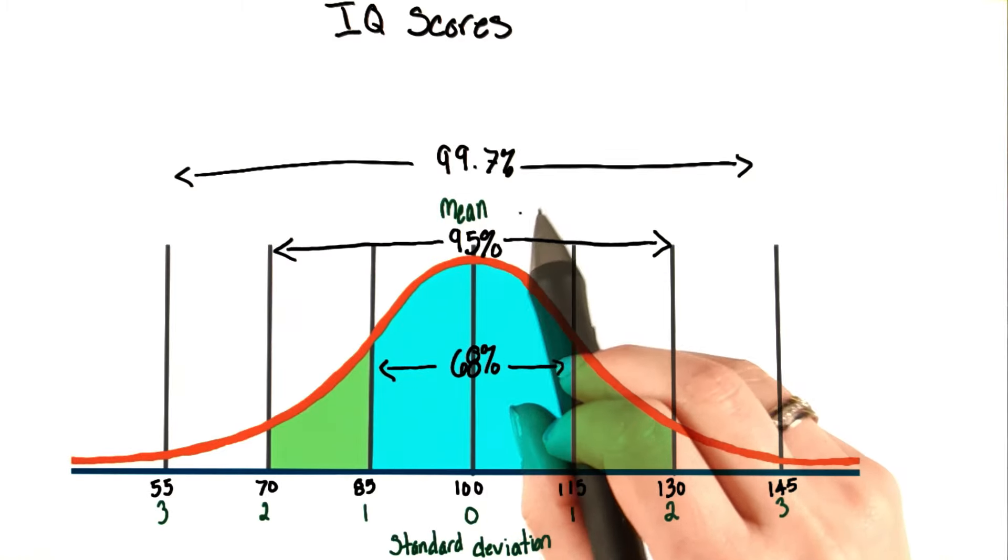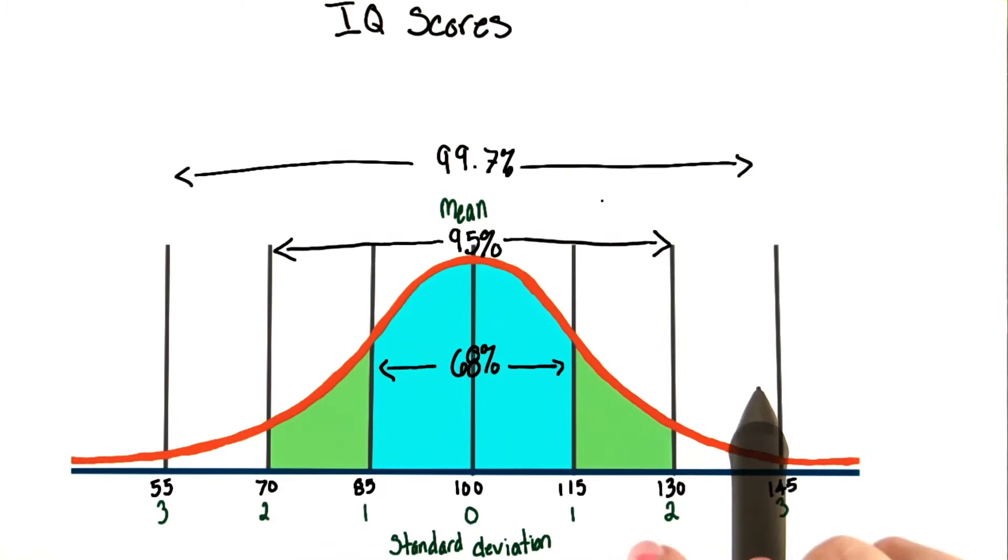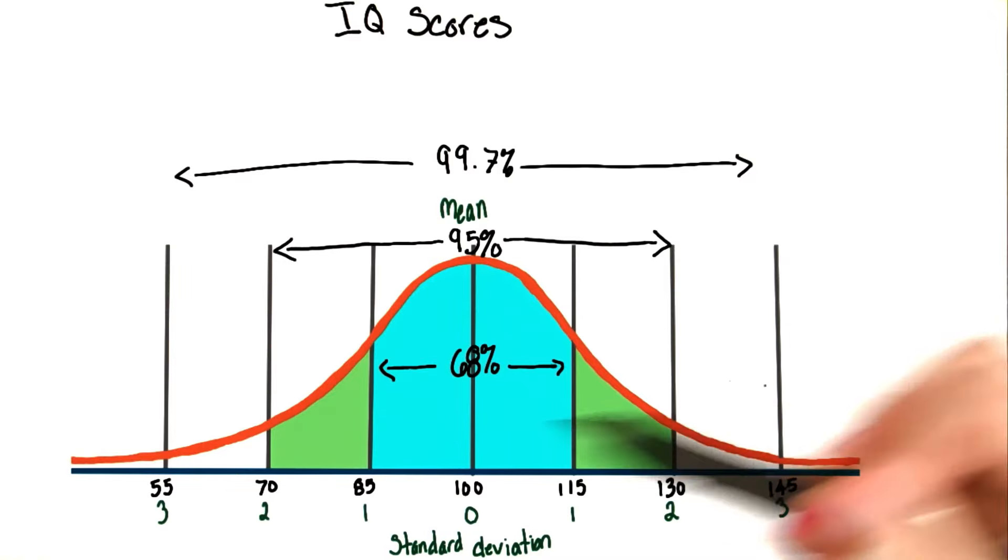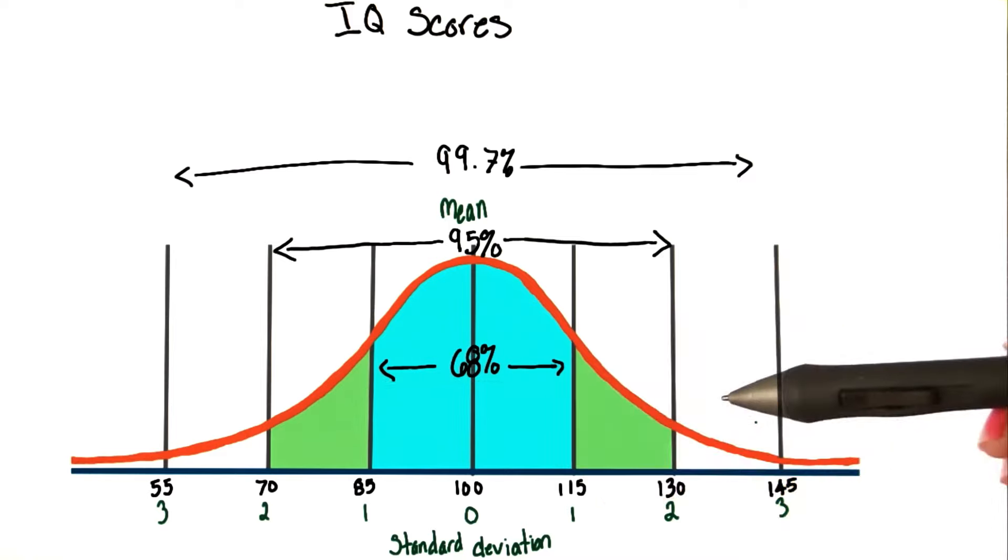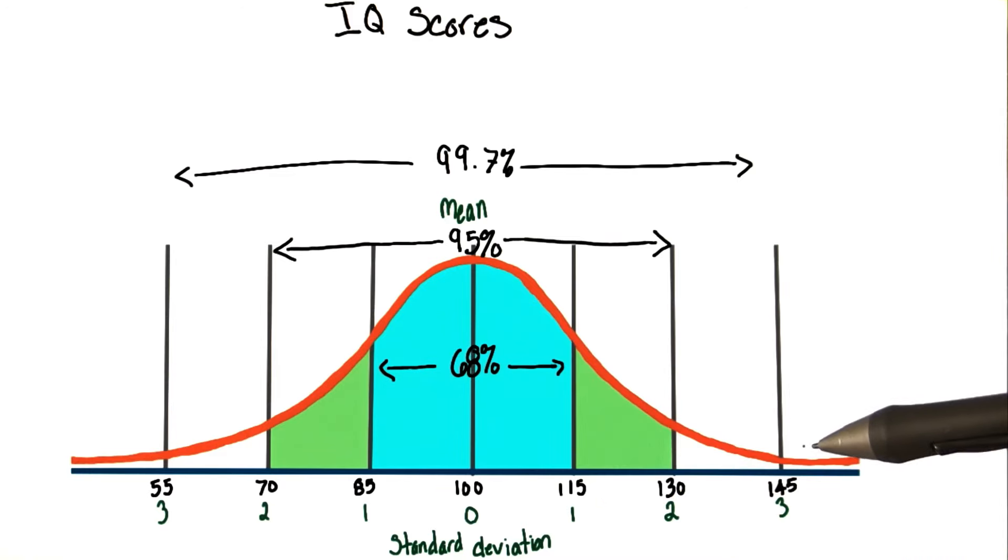99.7% of the population scores within three standard deviations of the mean, between 55 and 145. With 99.7% of the population scoring within three standard deviations in either direction of the mean, that doesn't leave a lot of room for people to score above 145 or below 55. It's only about 15 out of 1,000 people who score higher or lower than either one of these two extremes.